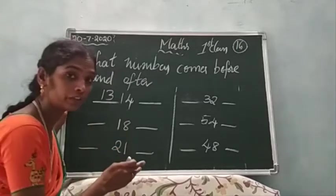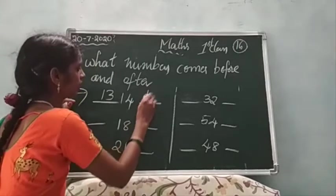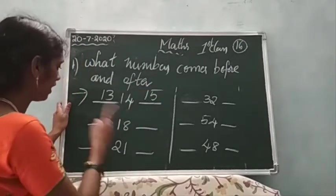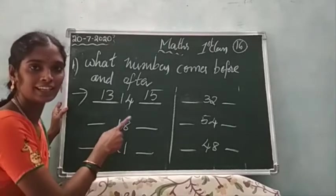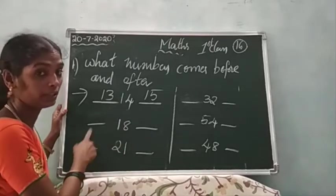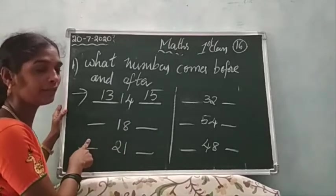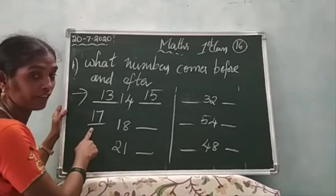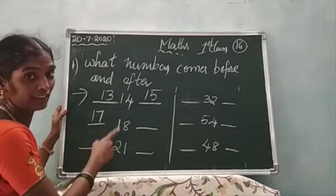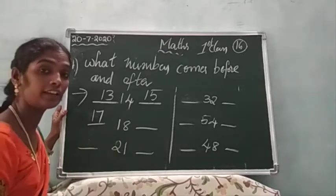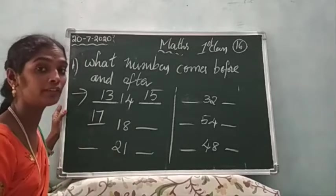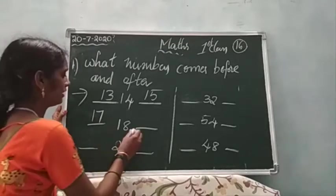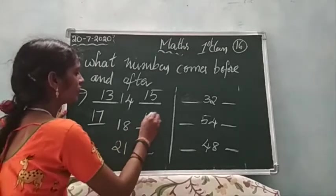14 after 15. So you can write here. After that 18: 18 before the number — 17. Good. 17, 18, 18 after the number — please tell me, children. 18 after 19.